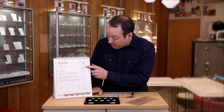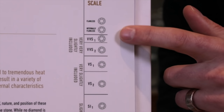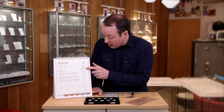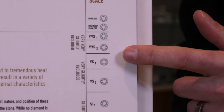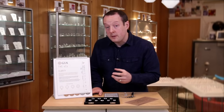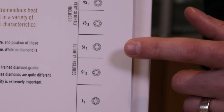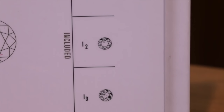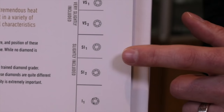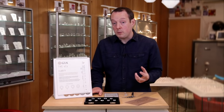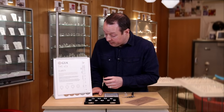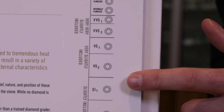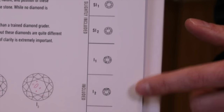Starting with a flawless diamond, then we have VVS1 and VVS2 — very very slightly included, incredibly tiny even under high magnification. After that, VS1 and VS2 refer to very slight inclusions. Then the slightly included grades: SI1 and SI2. Then the included diamonds — I1, I2, and I3 — where inclusions become very obvious. But stay above the I grades and you've got a lovely diamond. An SI1 is still a really nice stone; you won't see any inclusions with the naked eye.